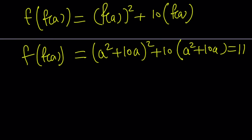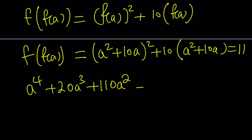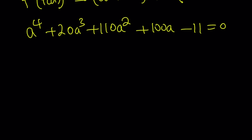Let's expand it. The equation looks like: a to the fourth plus 20a cubed plus 110a squared plus 100a minus 11 equals 0. Obviously this equation is solvable — it's a quartic, there's a formula. But if you're trying to find the values of a from here, I don't think there are any rational solutions, so that's going to be a little tough. You can use the quartic formula, which is quite complicated. Obviously we're not going to do this because it's too time consuming.